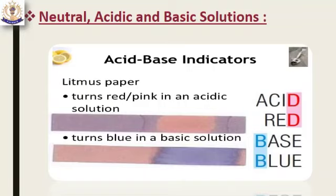Solution D has a pH of 2.3. It is less than 7, in the range of 0 to 6. Is this solution acidic, basic or neutral? Definitely this solution is acidic. Solution E has a pH of 8.5. This is more than 7, in the range of 8 to 14. So this solution is basic. And solution F has a pH of 7. What kind of solution is it? It is neutral.